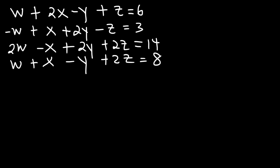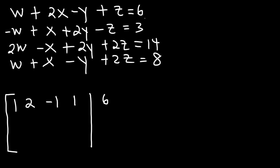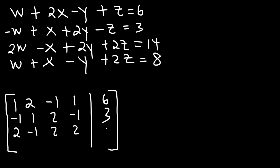The first thing we want to do is convert this into an augmented matrix. The coefficients for the first equation are 1, 2, negative 1, 1, and then we separate left from right with a vertical bar, so we have 6 on the right side. The second row is negative 1, 1, 2, negative 1, and 3. The third is 2, negative 1, 2, 2, and 14. And then 1, 1, negative 1, 2, and 8.